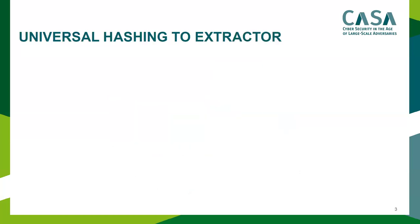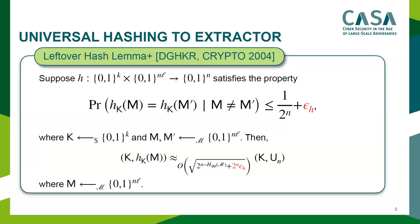It is well known that universal hashing can give a randomness extractor, and there are several works in this direction starting from the well-known Leftover Hash Lemma. Dodis et al. presented a version called the Leftover Hash Lemma Plus, which shows that if your hash function is sufficiently close to a perfectly universal hash function — meaning the collision probability should be one over two to the n — but here it is slightly more than that.